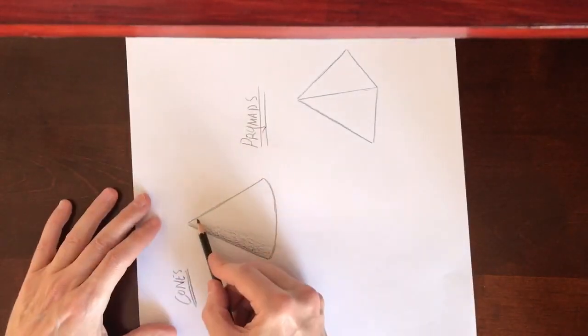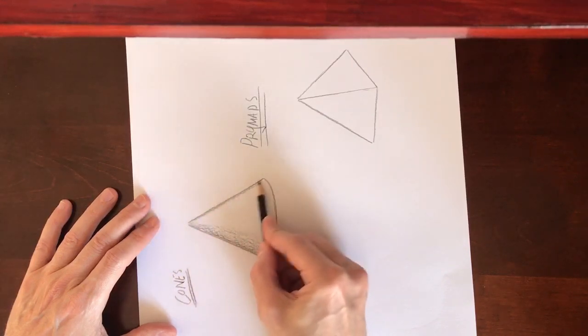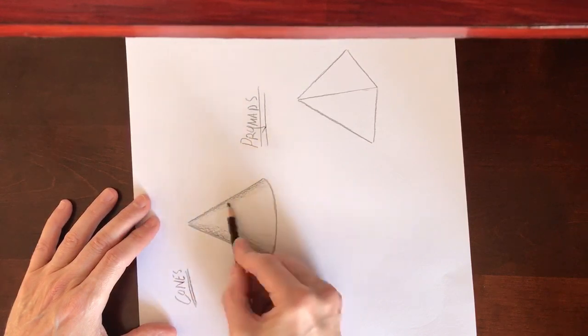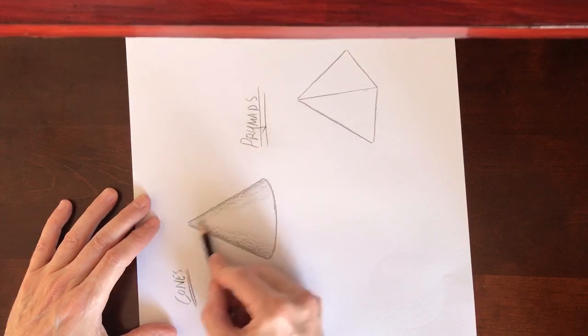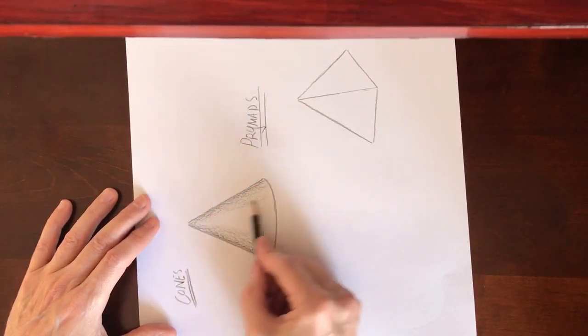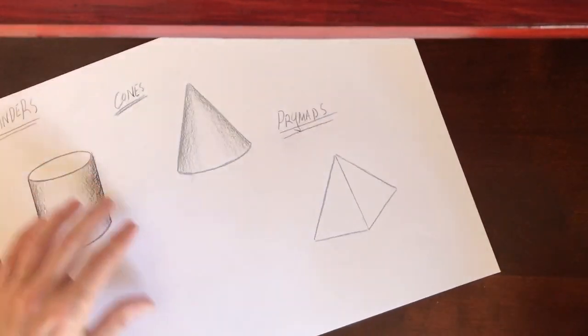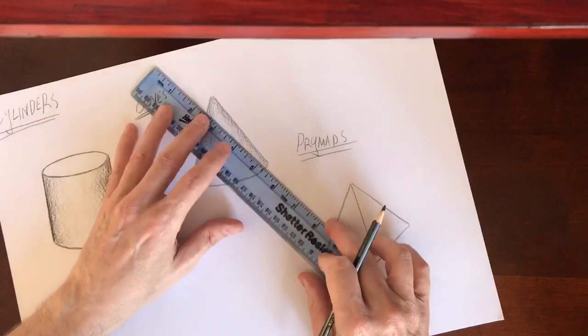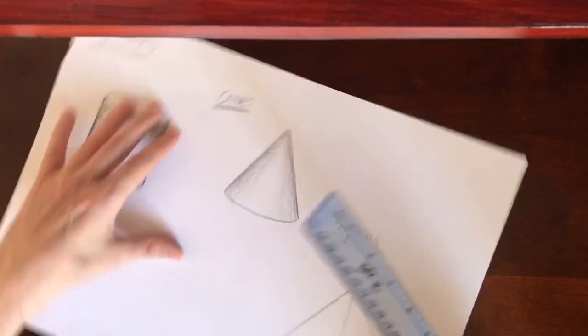And just with the cylinder, do the same on the other side to finish the effect. Taking care to get a nice gradual change in the tone. Remember to leave a white bit in the middle. The contrast with the white and dark is what really makes it stand out and look three dimensional.